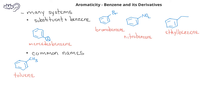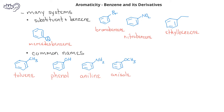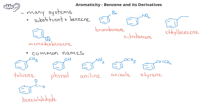We've already introduced the benzene derivative phenol, which has a hydroxyl group bonded to the benzene ring. Aniline has an amine group, an NH2 group, added to the benzene ring. Anisole has an OCH3 or methoxy group on the benzene ring. Styrene has a 2-carbon alkene bonded to the benzene ring. Benzaldehyde has an aldehyde functional group on the benzene ring, and benzoic acid has a carboxylic acid group on the benzene ring.